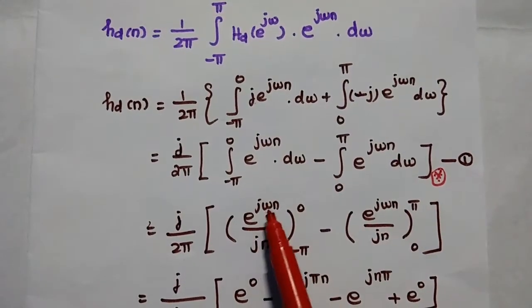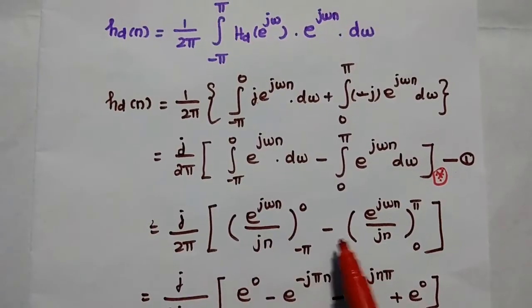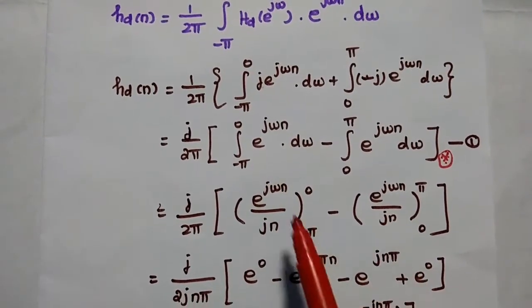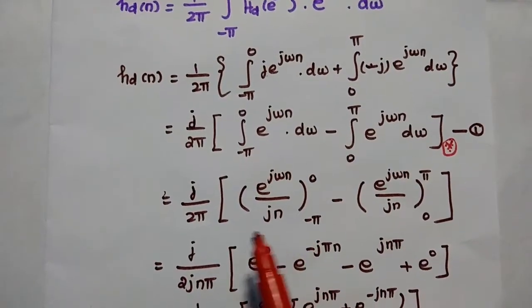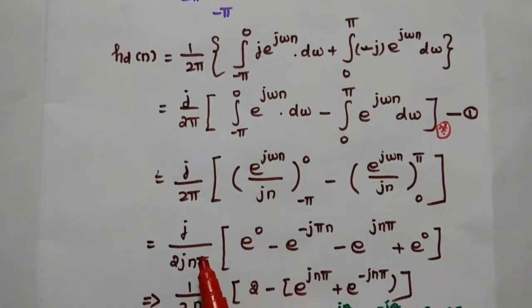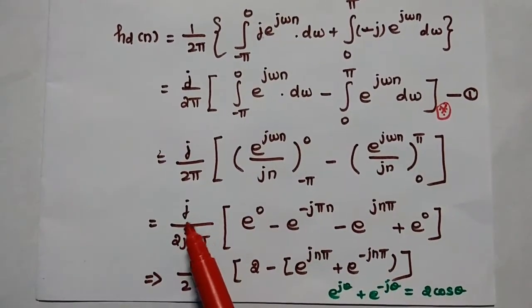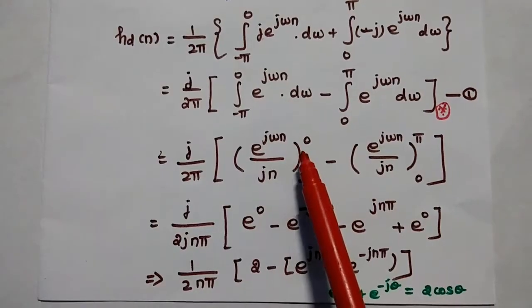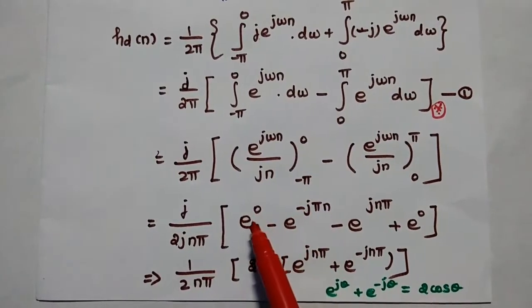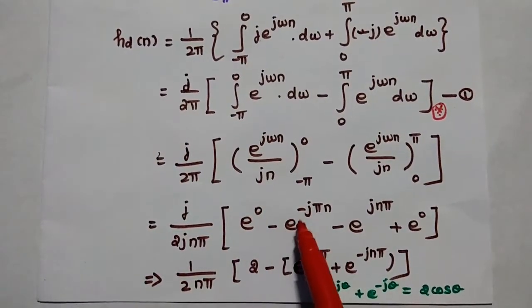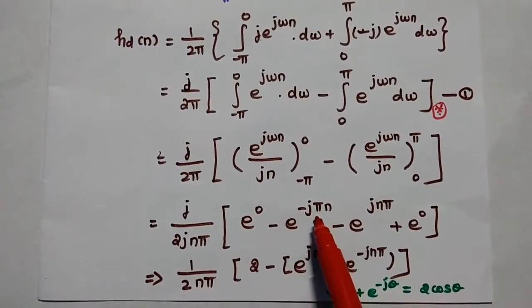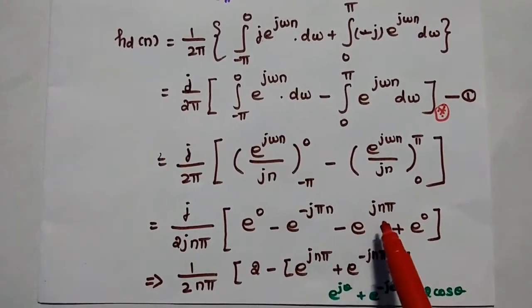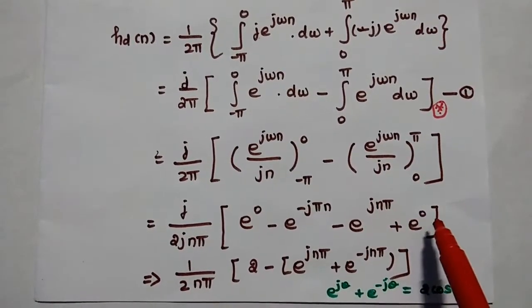After integrating with respect to omega, the terms become e^(jωn) over jn. Taking 1/jn as a common factor, we get j divided by 2jnπ, and then substitute the limits. This gives e^0 minus e^(−jnπ), and then for the second integral, e^(jnπ) minus e^0.